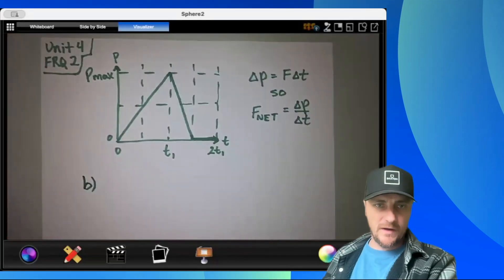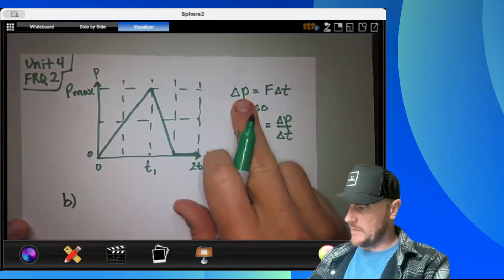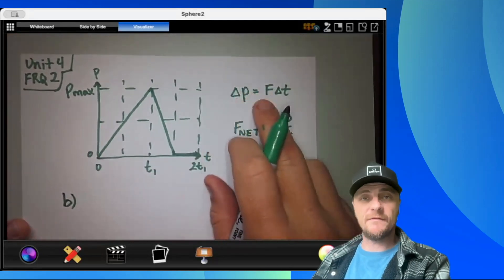Okay, so I have this graph here to help us figure this out. I'm going to write down some ideas. My change in momentum is equal to f delta t.